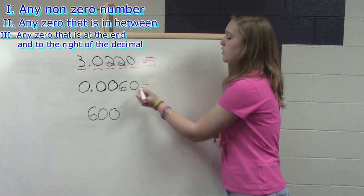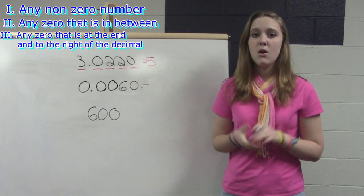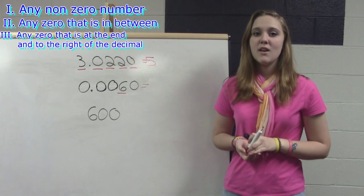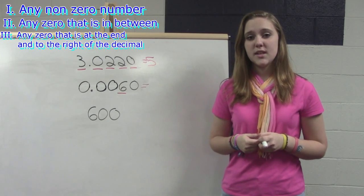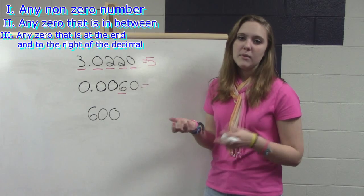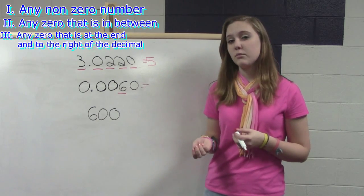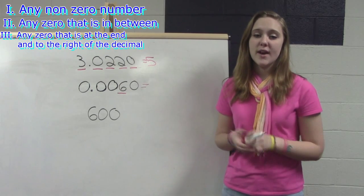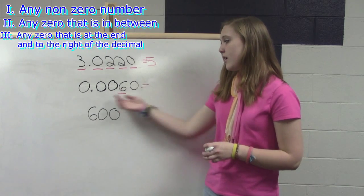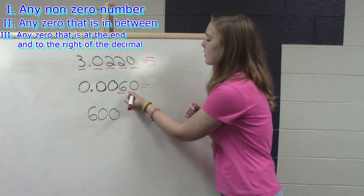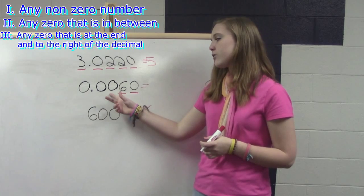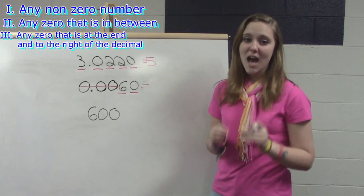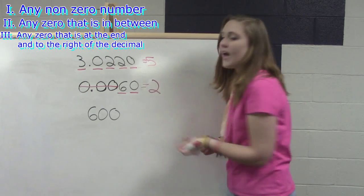Now our second number — same process, follow the three rules. Rule one: the number 6 is our only non-zero digit. Rule two: we have many zeros in this number, but none of them are in between two sig figs, so according to rule two none of those zeros are significant. Rule three: one zero is at the end of the number and to the right of the decimal point, so that zero is significant. The other three zeros don't meet any rule, so they are not significant. This second number has two sig figs.